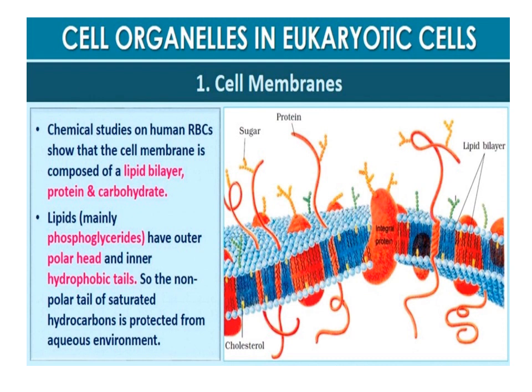Cell membrane: The detailed structure of the plasma membrane was studied only after the advent of the electron microscope. The first study of the plasma membrane was done on human red blood cells. The cell membrane is composed of lipids arranged within the membrane with the polar head towards the outer sides and the hydrophobic tails towards the inner part, ensuring the non-polar tails of saturated hydrocarbons are protected from the aqueous environment.